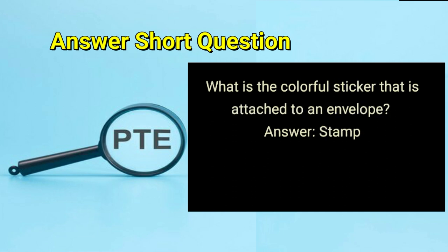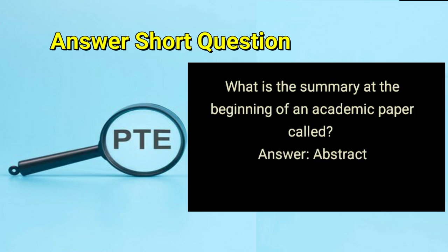What is the colorful sticker that is attached to an envelope? Answer: stamp. What is the summary at the beginning of an academic paper called? Answer: abstract.